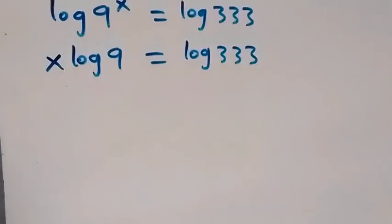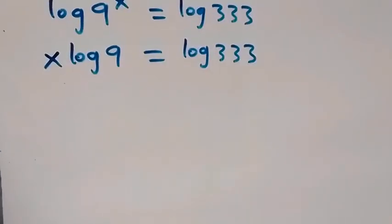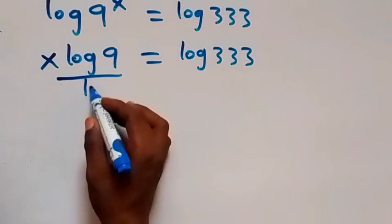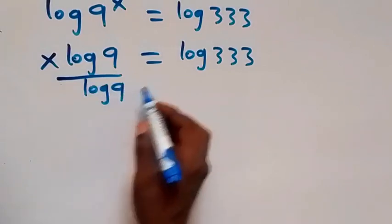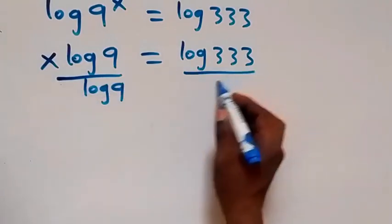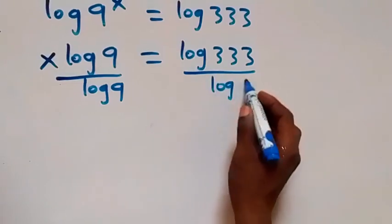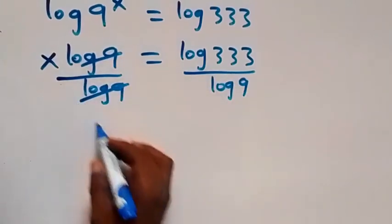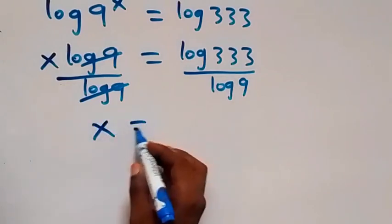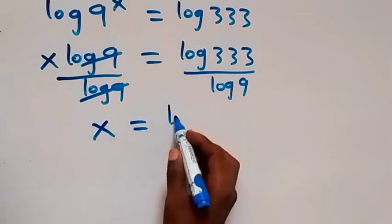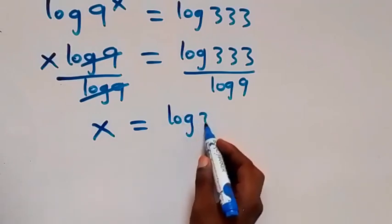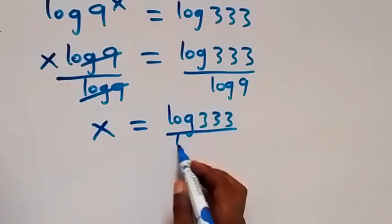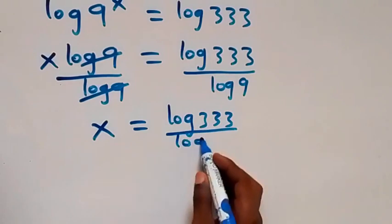Then we divide both sides by log 9. Dividing this side by log 9 and also this side by log 9, the log 9 terms cancel, and we are left with x equals log 333 over log 9.